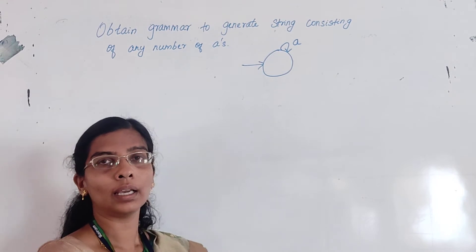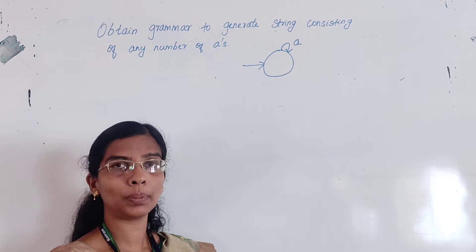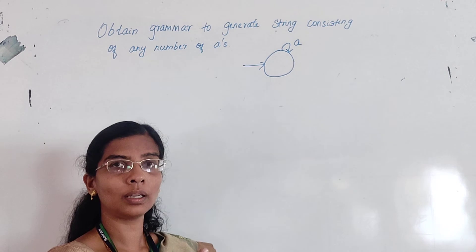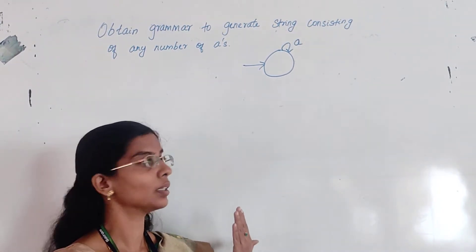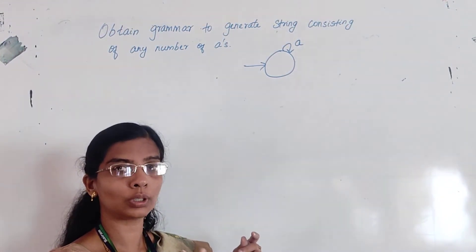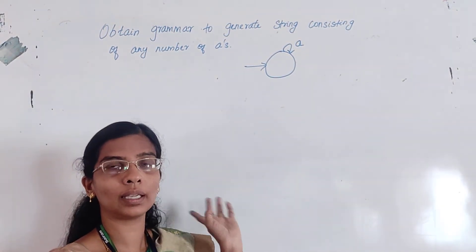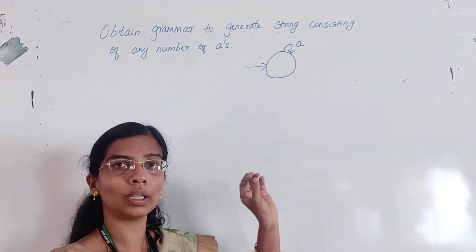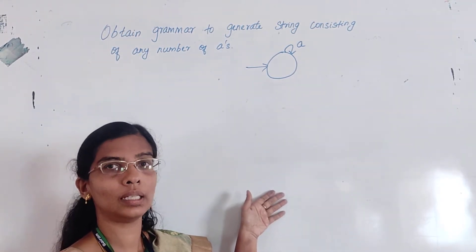In the definition of grammar, G is equal to (V, T, P, S), where S is the start symbol, and I told you the start symbol is the LHS of my first production. While designing the DFA, we will number the first state as S indicating the start state, and after that all states will be numbered as A, B, etc., with capital letters, so that while writing the regular grammar it will be easy for us.